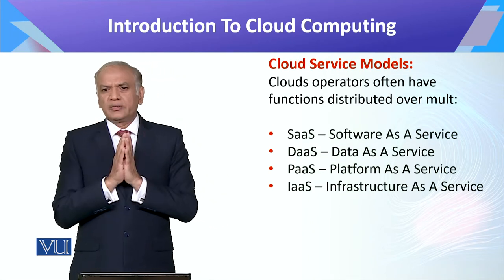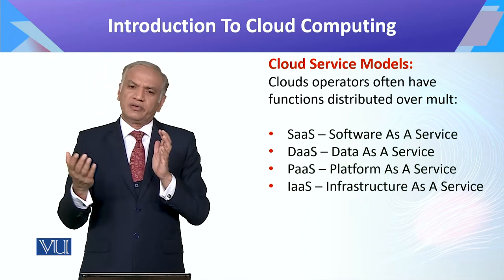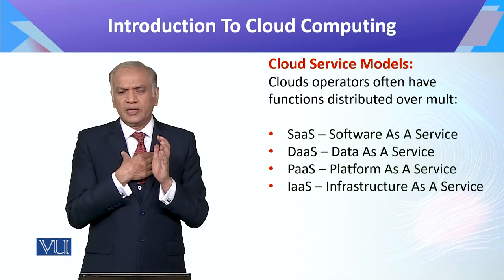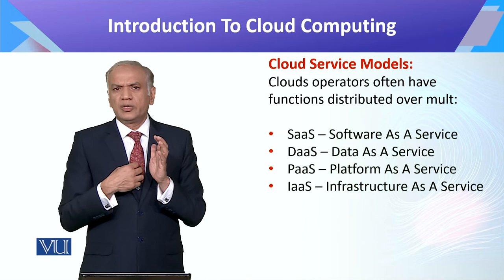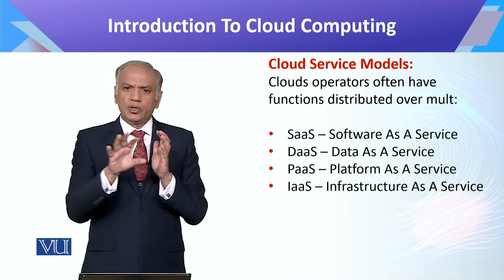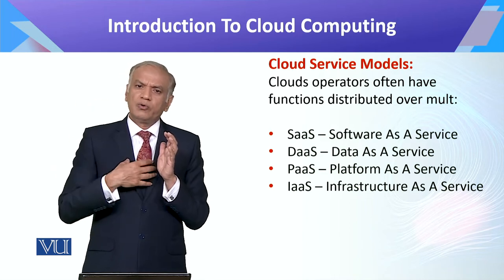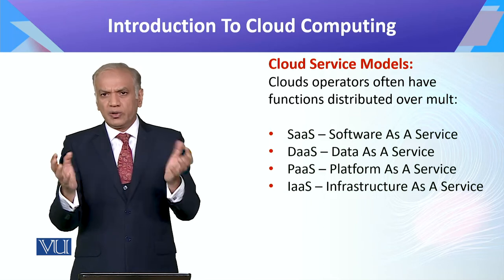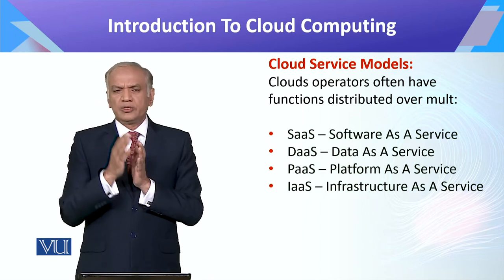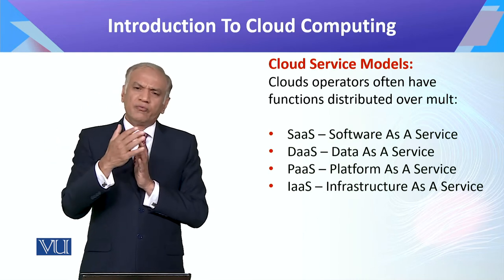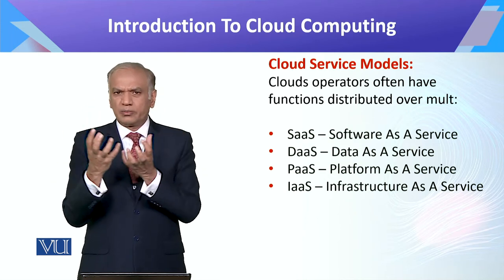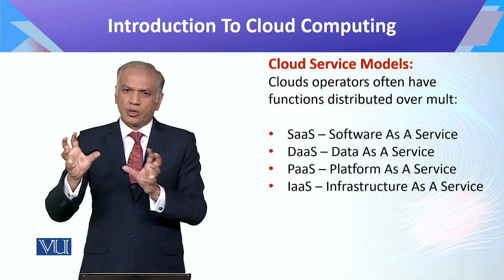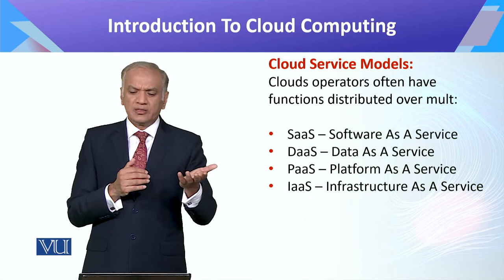Cloud service providers offer different services. First is Software as a Service (SaaS) — the most common. For example, email: if I use it individually it is free, but I can also get company email from Google or another provider without needing my own server or software. They just allocate space, you create your accounts and link your website. Database, financial software, and accounting software can all be part of SaaS.